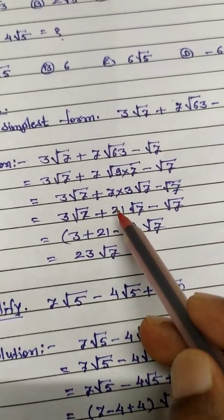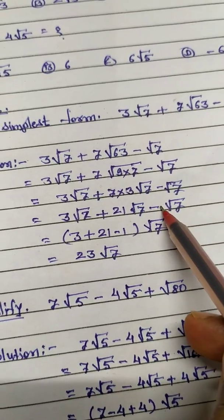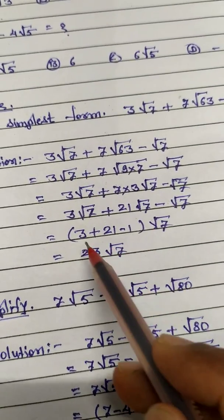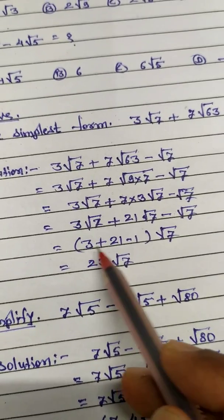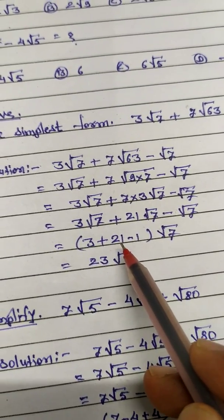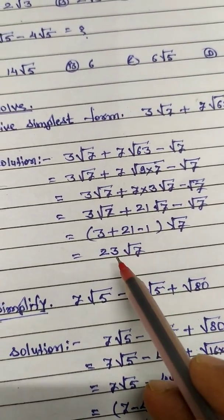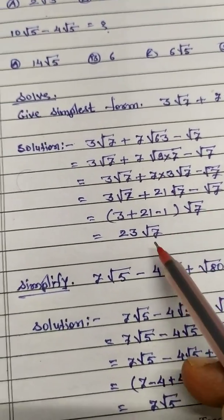So in this case this is a like surd. So I take the root 7 common, so remaining is 3 plus 21, and in this case 1, so I write this 1. So if we solve this bracket, 3 plus 21 means 24, 24 minus 1 means 23, and root 7 as it is.